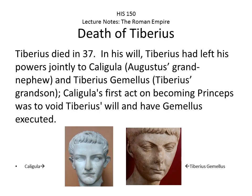Tiberius died in 37 AD. In his will, he left his powers jointly to Caligula — Augustus's grandnephew — and Tiberius Gemellus, Tiberius's grandson. Caligula's first act on becoming princeps was to void Tiberius's will and have Gemellus executed. Right from the beginning, we know that Caligula is no joke and will kill anyone who gets in his way.